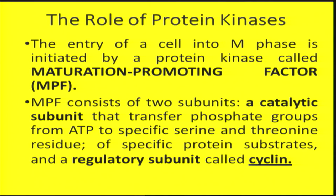MPF consists of two subunits: a catalytic subunit that transfers the phosphate group from ATP to specific serine and threonine residues of a specific protein substrate, and a regulatory unit called cyclin. The level of cyclins is variable. When cyclin levels are low, cell cycle would be arrested. When cyclin levels are high, the cell will progress into M phase.